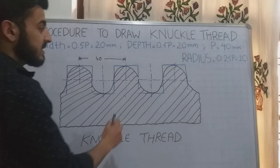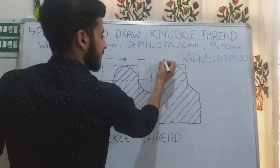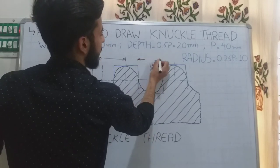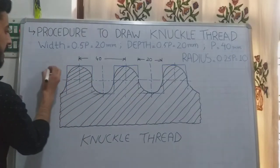This is the thickness. This thickness is 0.5p, which is 20mm. This is the depth.